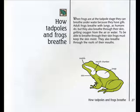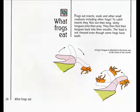When frogs are at the tadpole stage, they can breathe underwater because they have gills. Adult frogs breathe with lungs as humans do, but they also breathe through their skin, getting oxygen from the air or water. To be able to breathe through their skin, frogs must keep the skin moist. They also breathe through the roofs of their mouths. Frogs eat insects, snails, and other small creatures, including other frogs. To catch insects, they flick out their long, sticky tongues onto their prey, then flick their tongues back into their mouths. The food is not chewed even though some frogs have teeth. A frog's tongue is attached to the lower jaw at the front of the mouth.